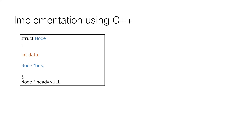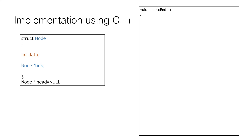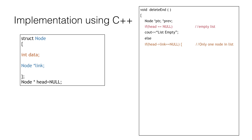Now let's implement this using C++. We start our delete end function and declare our two pointers ptr and priv. Before we move forward we check if our linked list is empty — if head is equal to null, we simply print that the list is empty. If deleting from the end, we also check if the linked list contains only one node: if the link part of the node pointed by head is null. If so, we equate ptr to head, make head as null to denote the list is now empty, and finally delete the node.